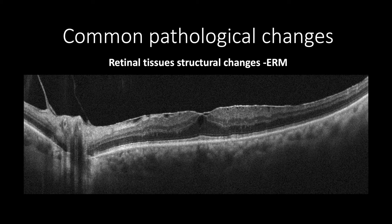This cross-section shows the epiretinal membrane appearing as a hyper-reflective membrane causing corrugated inner retinal layers forming peaks, along with intra-retinal cystic formation and disruption of the ellipsoid zone and increasing of retinal thickness.